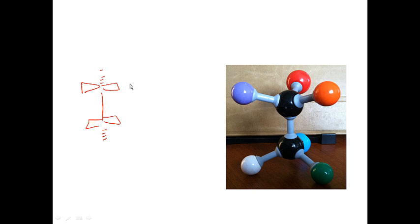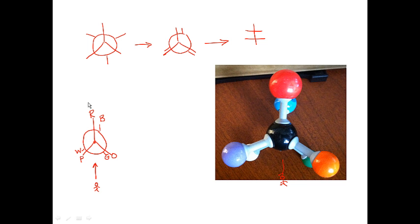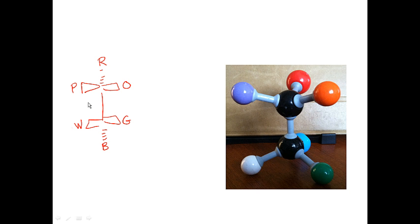Your Fischer projection would look like this. We've got our orange, our purple, and our red on the front. And then in the back we've got our blue, our green, and our white groups. So these two pictures — the Newman projection and this Fischer projection — are of that exact same molecule.